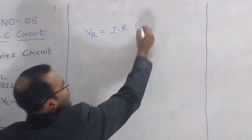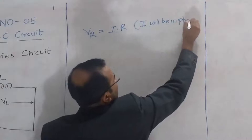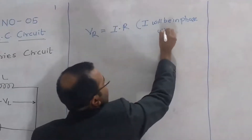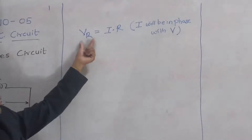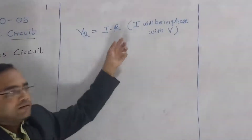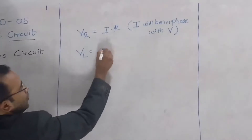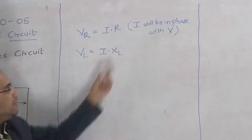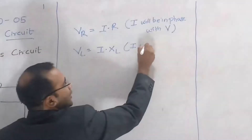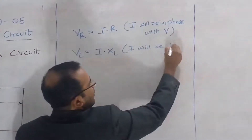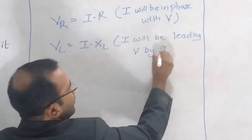The voltage drop across resistance VR is equal to I into R. The current will be in phase with voltage VR. Similarly, VL is equal to I into XL, where XL is the inductive reactance. The current I for voltage VL will be leading V by 90 degrees.